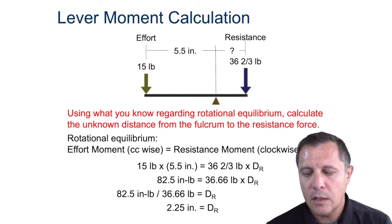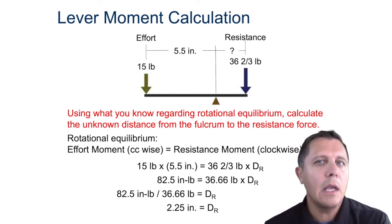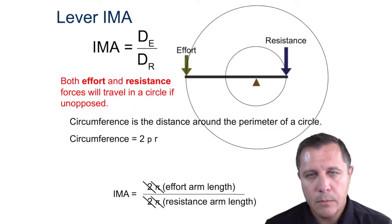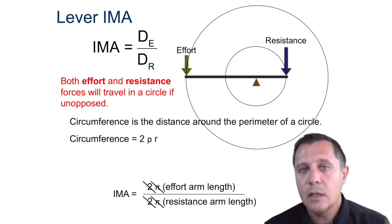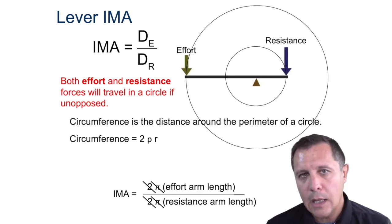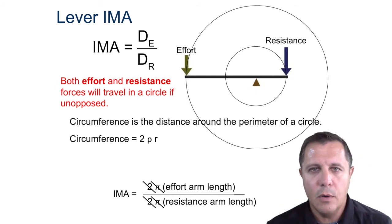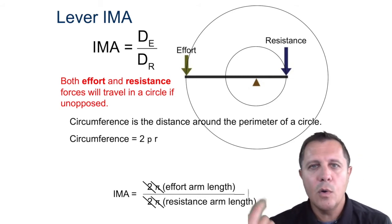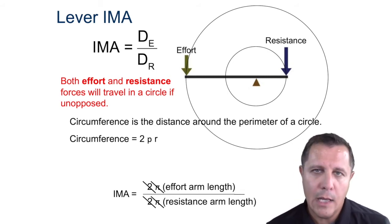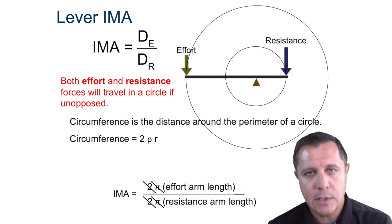There are more calculations on moments that we won't fully cover right now, but you can pause and look those over. The IMA for a lever is going to be the effort distance divided by the resistance distance. It's really going to be the radius — the distance traveled as a circle. Both have circumferences with a 2 and a pi, so those cancel out, and the IMA of a lever will be the radius of the effort divided by the radius of the resistance.